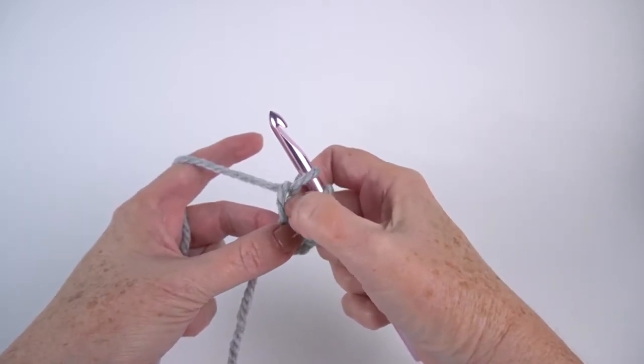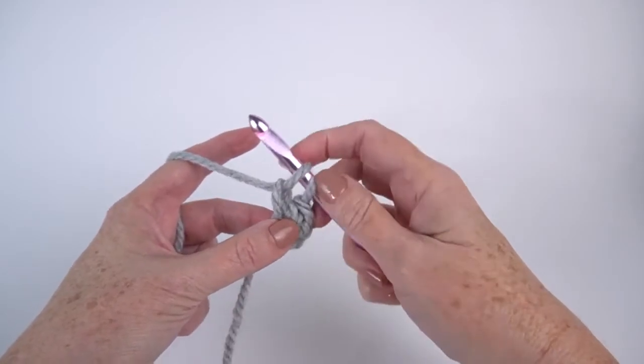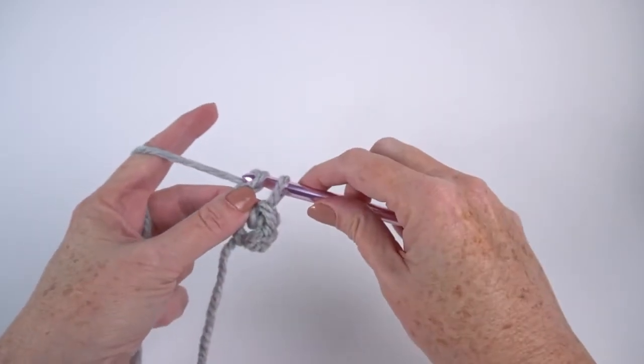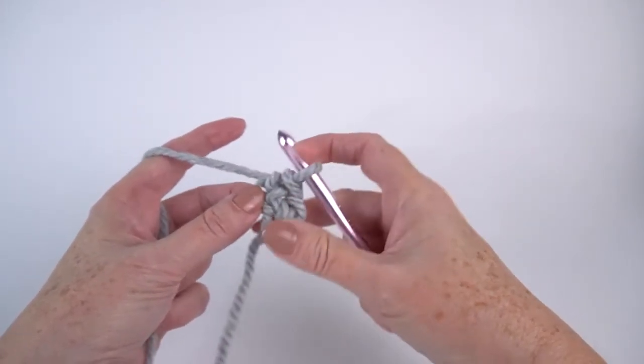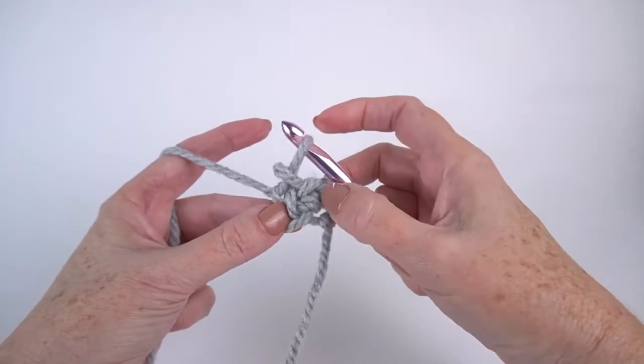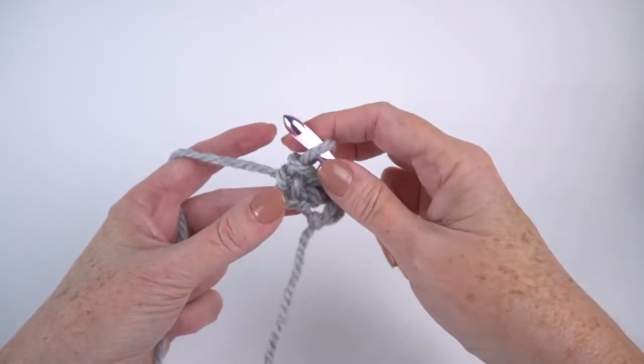So I want you to look because this is essentially replacing the foundation chain. This is where that chain is going to be. And then I'm going to yarn over and draw through two, which finishes my single. So this is what we look like so far. There's the single crochet I put in the second chain from hook. There's the single crochet that I just made.